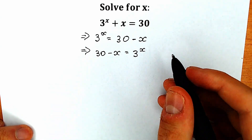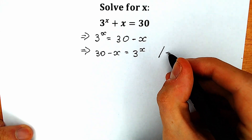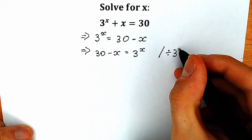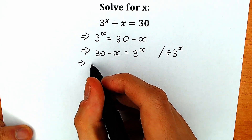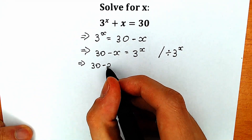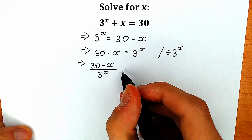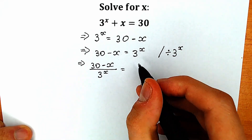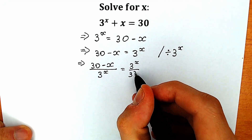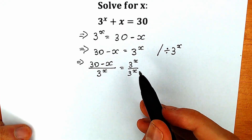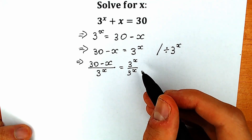Right now let's divide both sides by 3 to the power x. We will have 30 minus x on the left side divided by 3 to the power x. On the right side, 3 to the x divided by 3 to the x — we can cancel those, giving us 1.